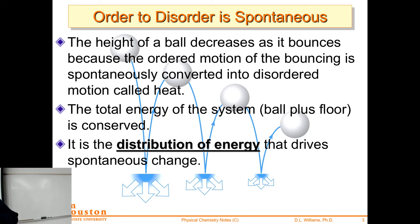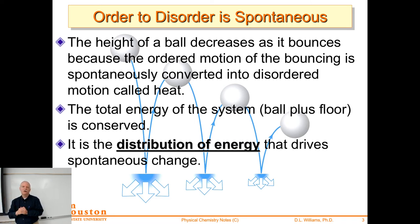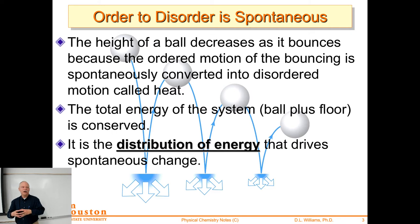Part of the reason we can't reach 100% efficiency is entropy — order to disorder is spontaneous. You drop a ball and it bounces, but doesn't bounce back to where you dropped it, even a golf ball. The energy deposited into the floor is lost to disorder. If you had a perfectly elastic floor that couldn't absorb any energy, that energy would be returned to the ball — but you have all these vibrational degrees of freedom. Once you excite those vibrations, the energy is randomized and you can't get it back.